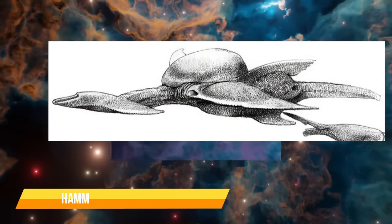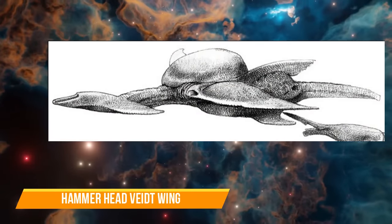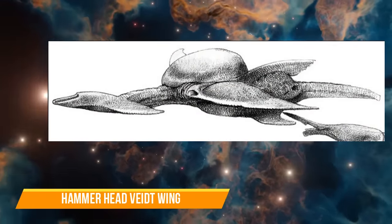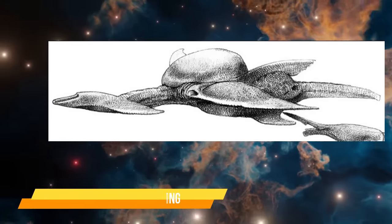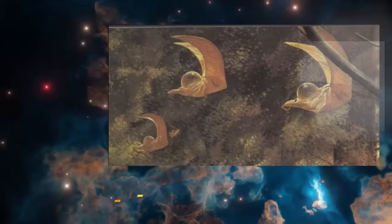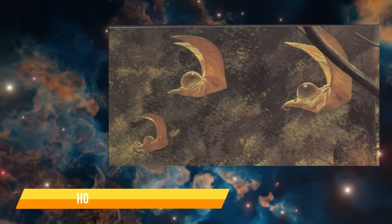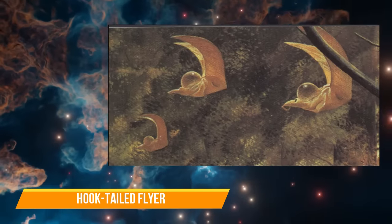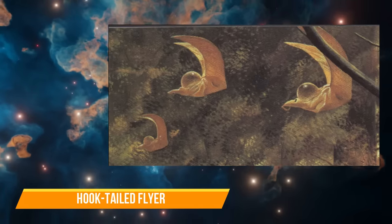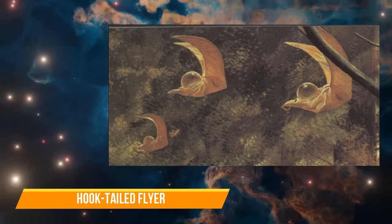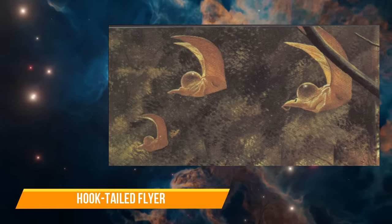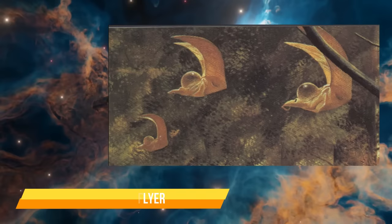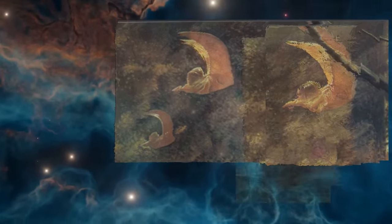The Hammerhead Vite Wing is a flyer that has a crescent-shaped head on the end of a skinny neck. They are preyed upon by raybacks. Hook-Tailed Flyers are airborne organisms native to the pocket forests of Darwin IV. They use the hooks of their tails to hang from branches, and also have a methane-filled bladder on their back to supplement their wings.